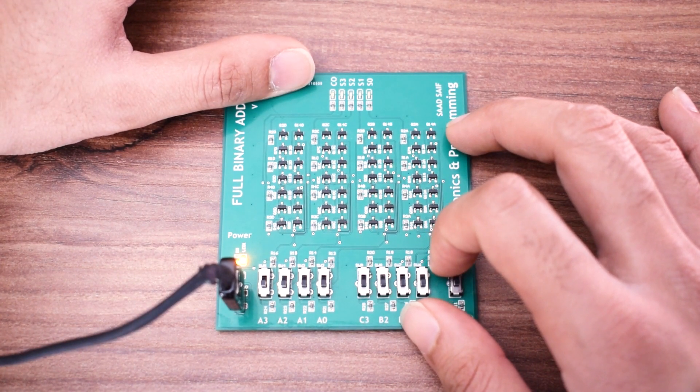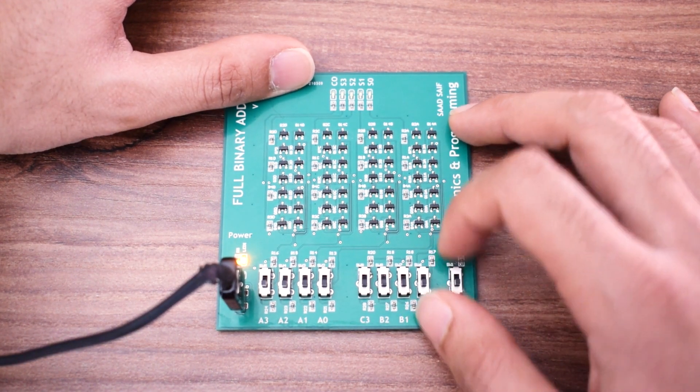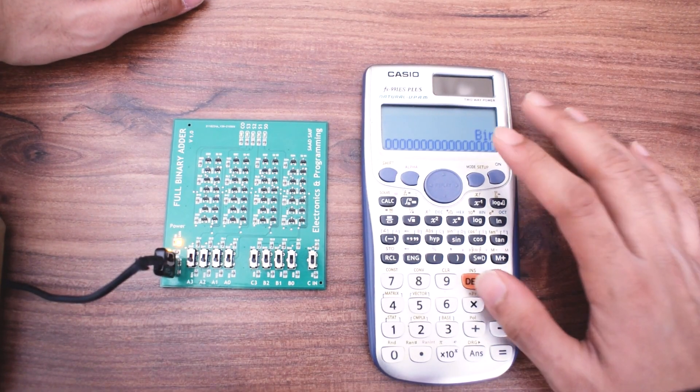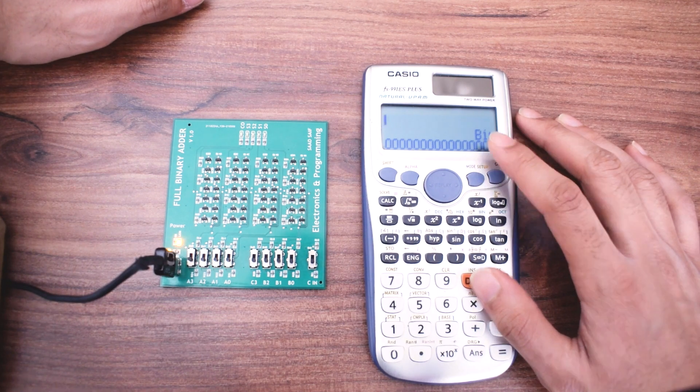So now we can actually take a look at a few examples and see if it works properly. Now let's try and look at a few examples. I have my calculator here just for converting between decimal and binary.